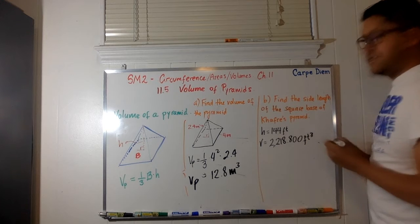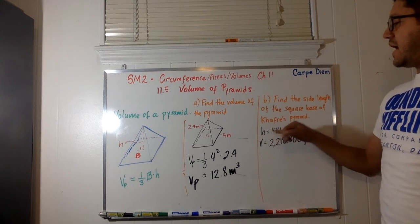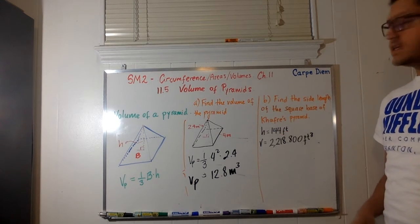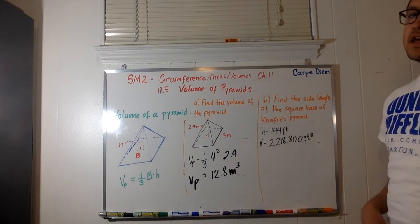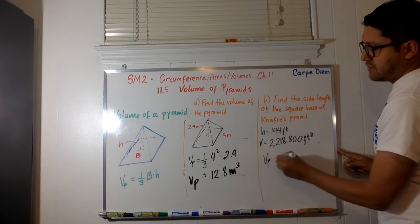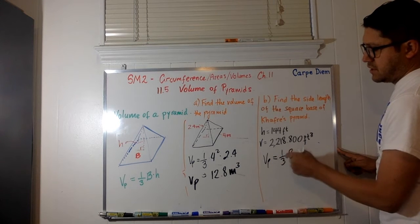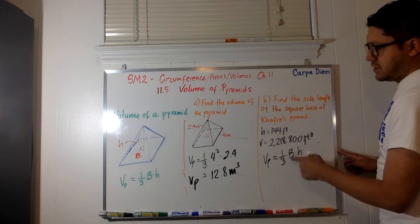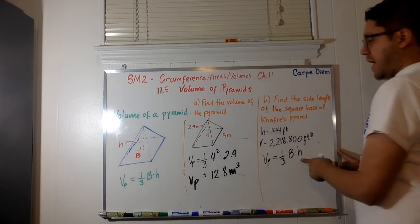We are also given the value of the height of that pyramid, which is 144 feet, and we just need to find the side length of this pyramid. So, same idea. We have the volume of a pyramid, which is one-third of the product of the area of the base multiplied by the height.